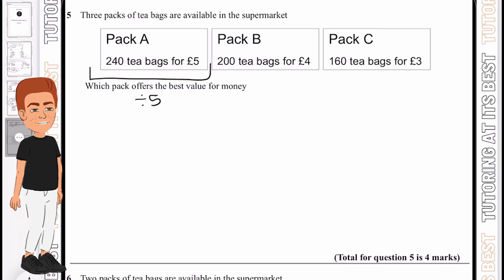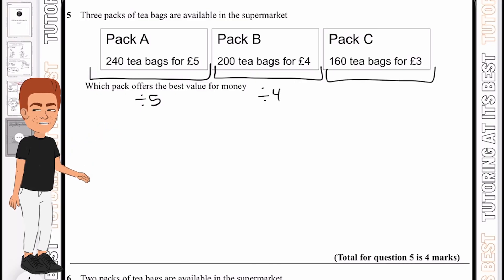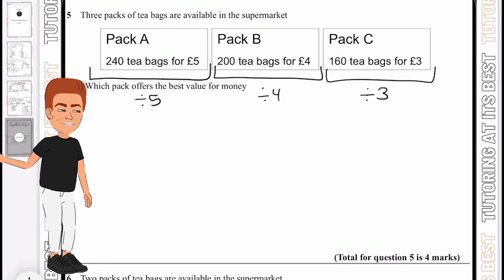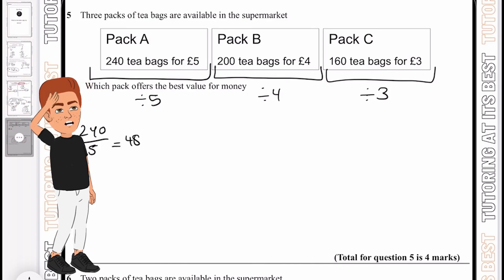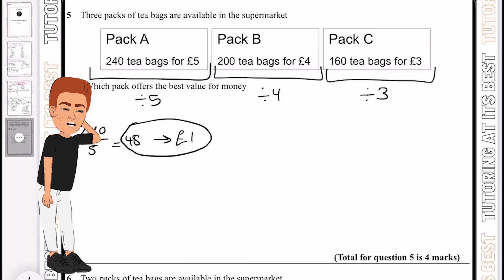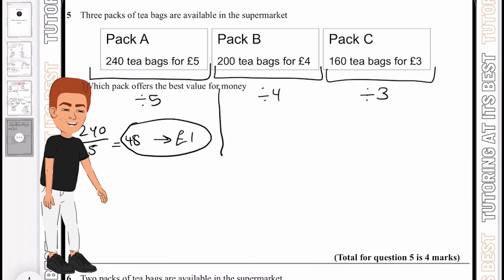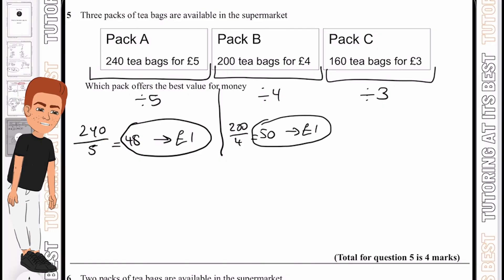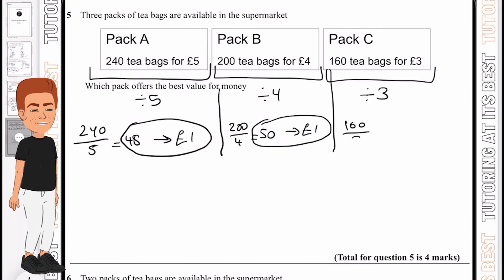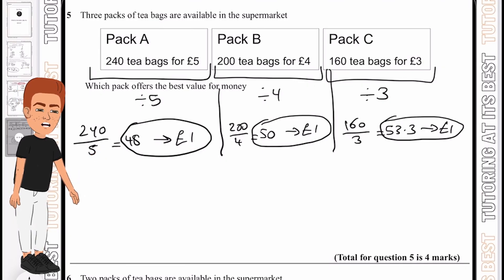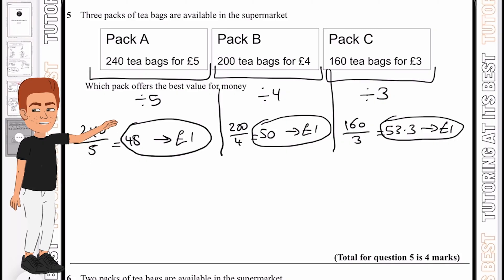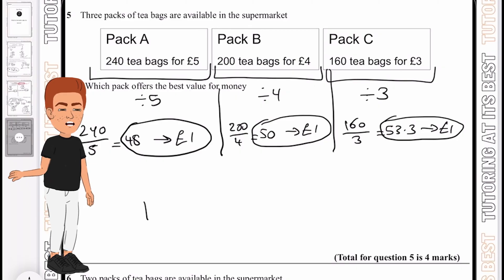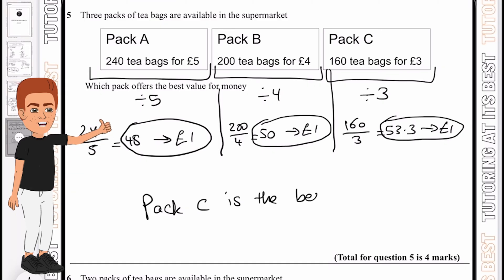I'll take pack A and divide by 5, pack B divide by 4, and pack 3 divide by 3. 240 divided by 5 equals 48, and £5 divided by 5 equals £1. We can get 48 tea bags for £1. For the 200 tea bags, 200 divided by 4 equals 50 tea bags for one pound. For pack C, 160 divided by 3 gives 53.3 for one pound. The best value is pack C because we get 53.3 tea bags for one pound. Realistically you won't get 0.3 of a tea bag, but 53 is larger than 50 and 48, so pack C is much better.